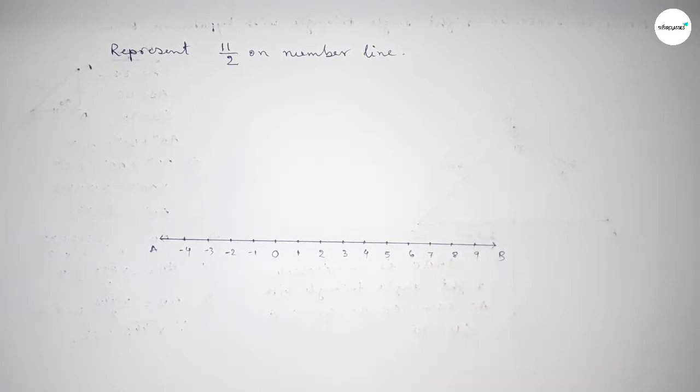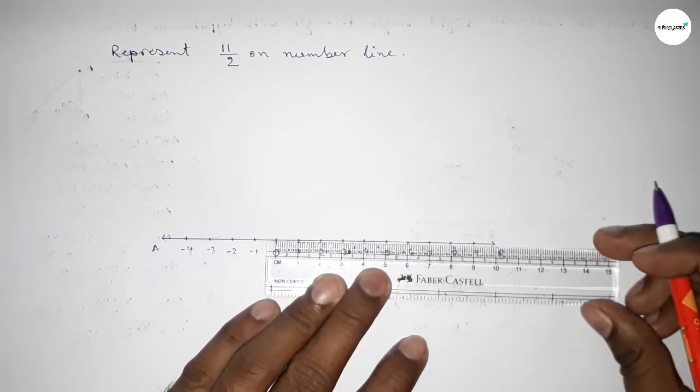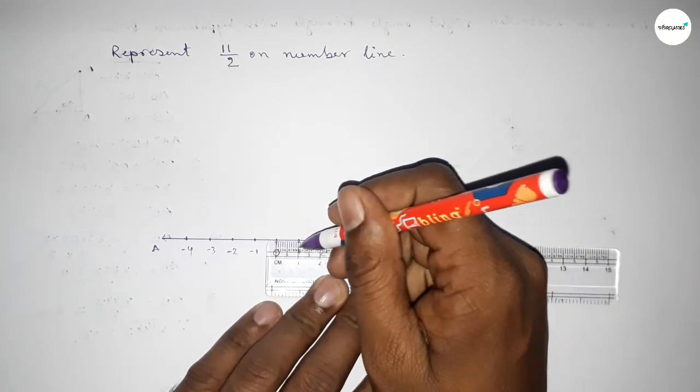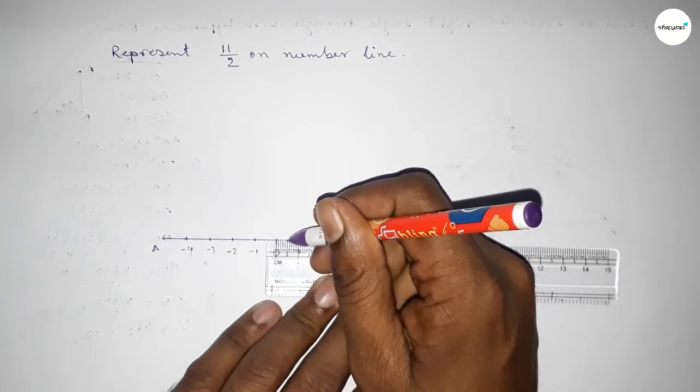Now we have to divide the length between 0 to 1, 1 to 2, 2 to 3 by 2. So first this is half.